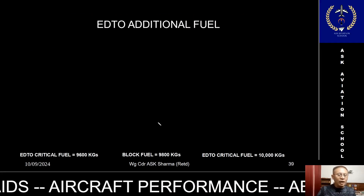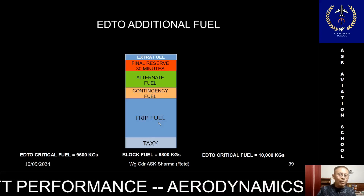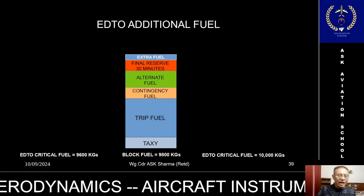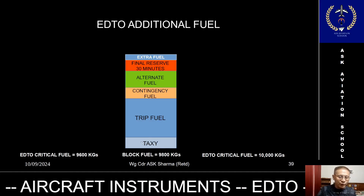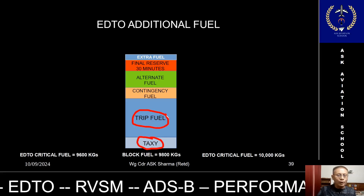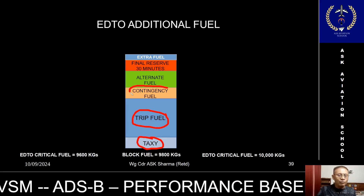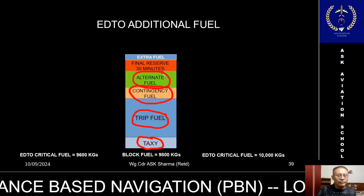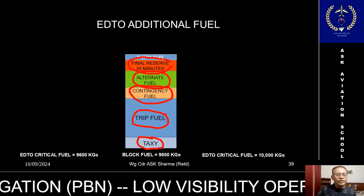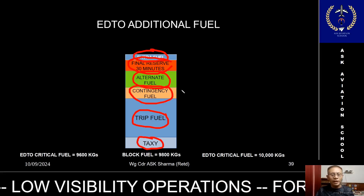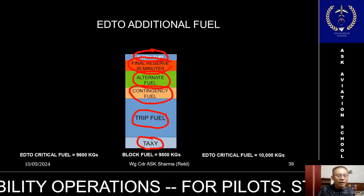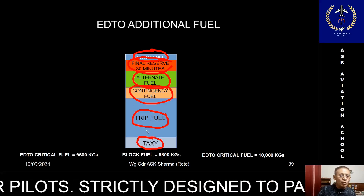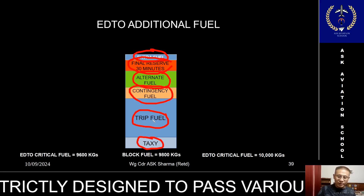Now let's have a comparison between the normal fuel — that is the block fuel — required to fly from one place to another, in my example from Nairobi to Singapore. The block fuel will consist of: taxi fuel, trip fuel from Nairobi to Singapore, contingency fuel which is five percent of the trip fuel, the destination alternate fuel, final 30-minute reserve, and extra fuel. The total of all this is the block fuel for the sector.